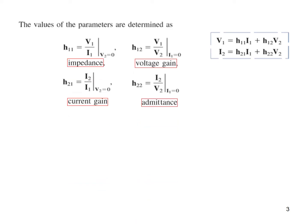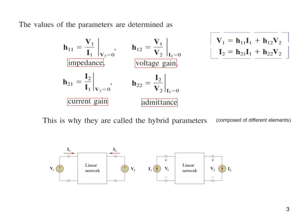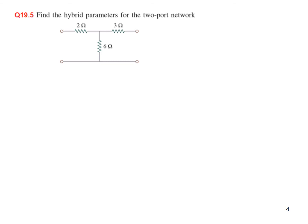H22 is I2 divided by V2 provided I1 is zero. Note carefully: V over I is impedance, V over V is voltage gain, I over I is current gain, and I over V is admittance. So this is a mixture — we have impedance, voltage gain, current gain, and admittance — and that is why these are called hybrid parameters, meaning composed of different elements. We can connect voltage sources, current sources, or a mixture of both.